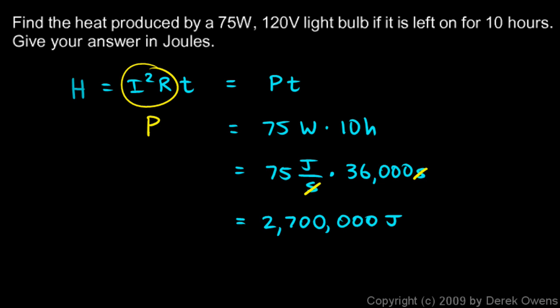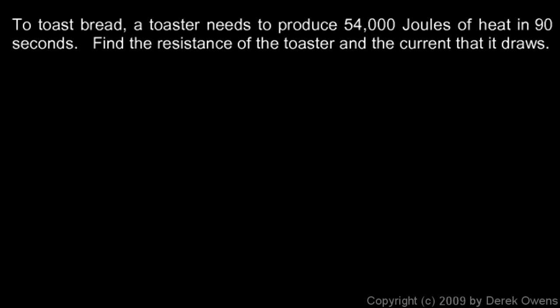Next example: to toast bread, a toaster needs to produce 54,000 joules of heat in 90 seconds. Find the resistance of the toaster and the current that it draws. We're going to assume standard household electricity at 120 volts.